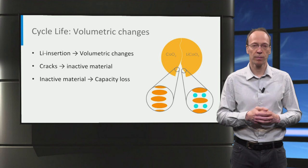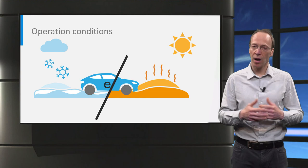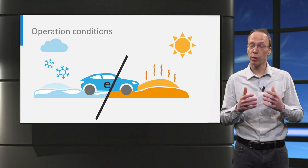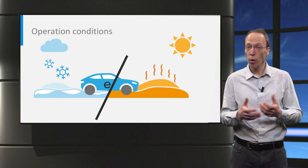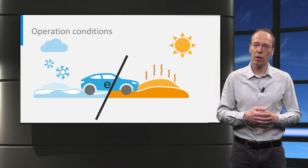The operation conditions of lithium-ion batteries also have a large impact on cycle life. High temperatures enhance electrolyte decomposition, which, as discussed, is detrimental for the cycle life. High temperatures can occur due to the outside temperature, but also because of the heat development in the battery simply due to the internal resistance. This may require active cooling to guarantee a long cycle life. Low temperatures increase the internal resistance, which effectively lowers the power and energy density of batteries, but only when kept at this low temperature.